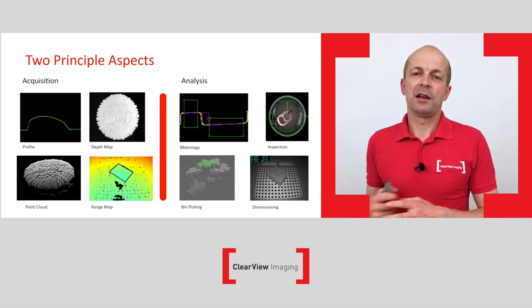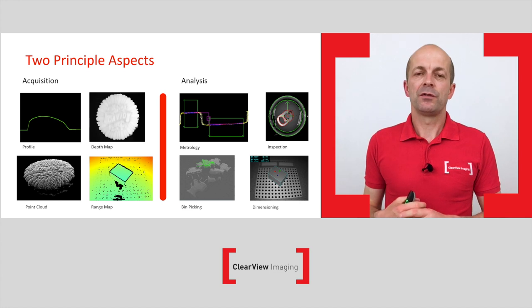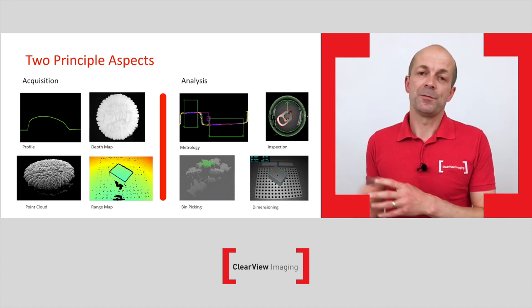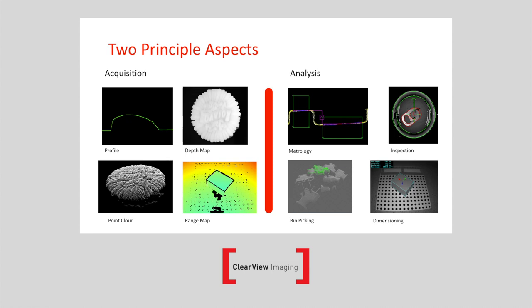Before we move into the more technical aspects of the presentation, there are two principal things to cover. First is some terms of analysis and acquisition. On the acquisition side, there are lots of terms bandied around when talking about 3D vision systems: profiling, depth map, point cloud, range map — these are all different ways in which you can acquire 3D information through a 3D camera device. Once you have those, you would then do some analysis: metrology, inspection, bin picking, or overall dimensioning.